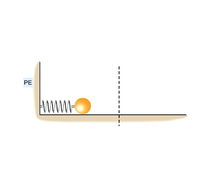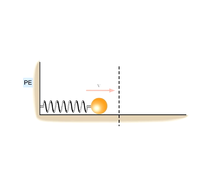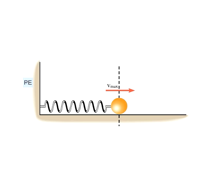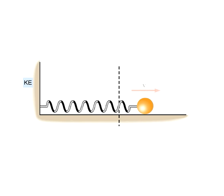At this instant, the force of the spring on the ball will push the ball back toward the equilibrium position of the spring. The compression in the spring decreases, reducing the amount of elastic potential energy. At this instant, the compression in the spring is gone, as is its elastic potential energy, and all of the system's energy is kinetic energy associated with the moving ball. Once again, the momentum of the ball causes it to continue on and create a stretch in the spring.